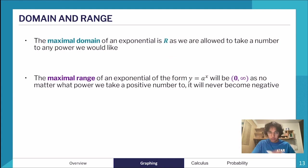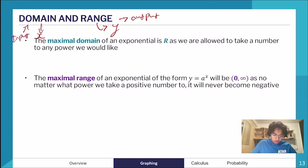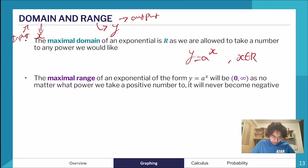Before getting into exponentials, let's recap domain and range. Domain relates to x-values and range relates to y-values. Another way to think about it: range is the output and domain is the input of a function. The maximal domain of an exponential — generally in the form y = a^x — is all real numbers, since x can be anything.